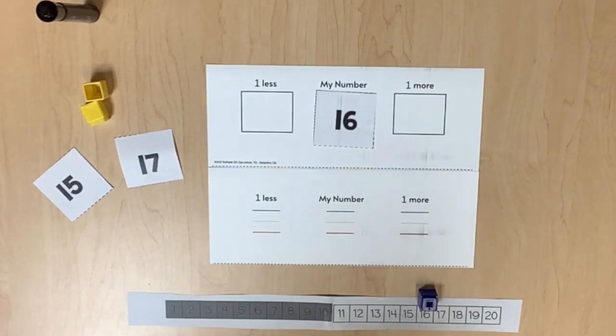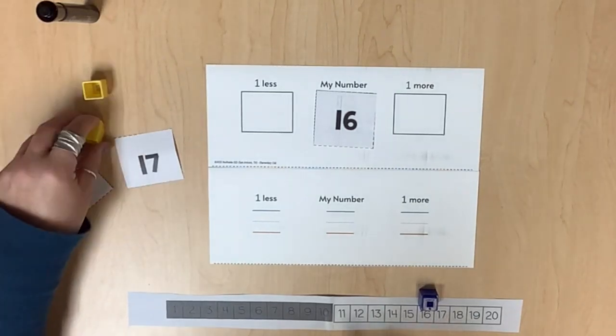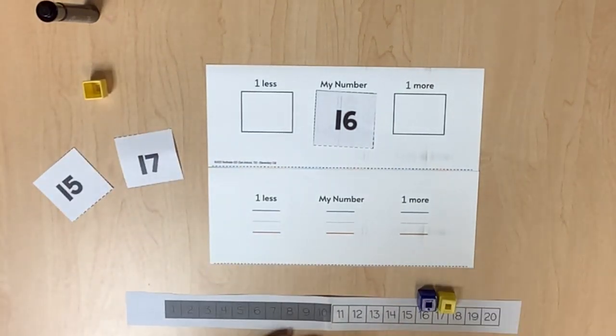As students identify a number that is one more or one less, encourage either counting on from 16 (16, 17) or counting backward from 16 (16, 15).